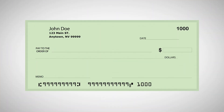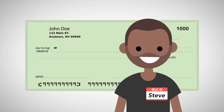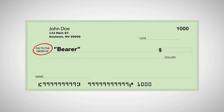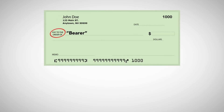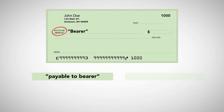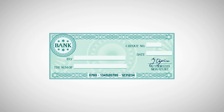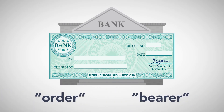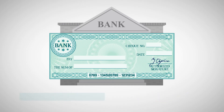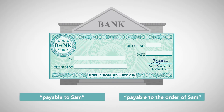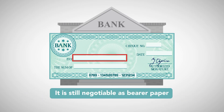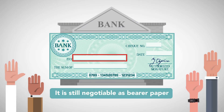For an instrument to be negotiable, it must state that it is payable to the order of an identifiable person or to bearer. Note that the code requires the use of the actual words payable to the order of. In the case of bearer instruments, it may be payable to bearer, to cash, to the order of bearer, or to the order of cash. However, bank checks constitute an exception — they may safely omit the words order or bearer and still retain their property of negotiability. For example, a check may be payable to Sam instead of payable to the order of Sam and still be negotiable. Note that if an instrument fails to name the payee, it is still negotiable as bearer paper and any legal holder may cash it.